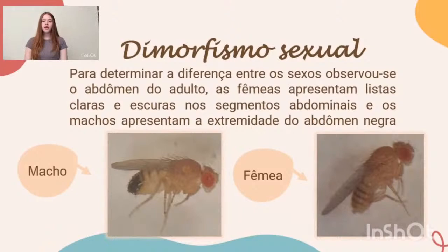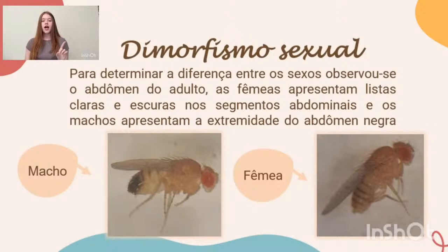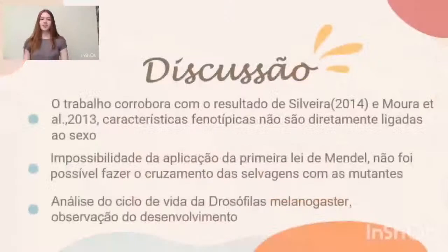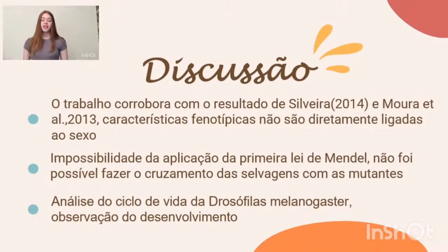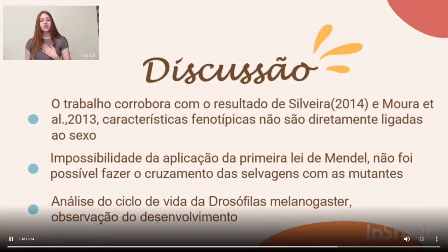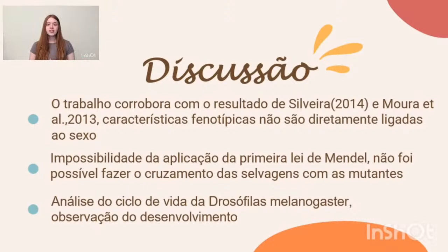Após o desenvolvimento do adulto, foram identificados machos e fêmeas observando o abdômen: fêmeas apresentam listras claras e escuras nos segmentos, enquanto machos apresentam a extremidade do abdômen negra. Foi feita uma discussão sobre os dados obtidos. Pelo teste Qui-quadrado, os resultados corroboram com Silveira (2014) e Moura et al. (2013), onde as características fenotípicas não são diretamente ligadas ao sexo. Também se discutiu a impossibilidade de aplicar a primeira lei de Mendel.